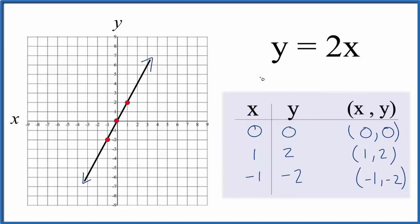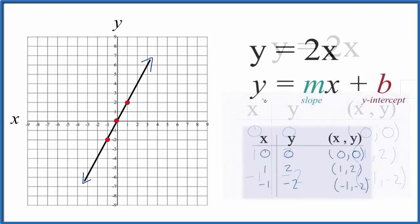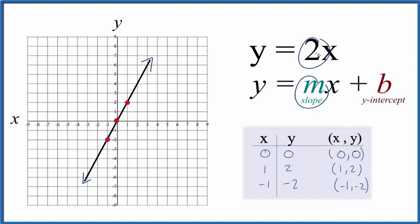Let's check our work with the slope-intercept formula. So we have y equals mx plus b. The m, the slope, that's 2, but the b, the y-intercept, we don't see anything. What we can say is that the y-intercept, that's 0, and that won't change the equation.